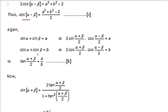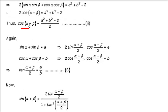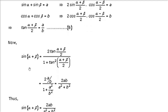We already found cos(α − β). Now for sin(α + β), use the formula sin(α+β) = 2 tan((α+β)/2) / (1 + tan²((α+β)/2)). Substituting a/b for tan((α+β)/2), you get sin(α+β) = 2ab / (a² + b²).